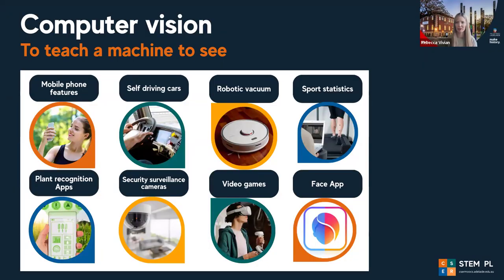Now we're going to jump into looking at a couple of areas: computer vision and natural language processing. Computer vision is essentially an approach to teaching a machine to see. Computer vision techniques are used in a whole range of digital systems that allow machines to recognize objects in the world. Interesting examples include monitoring plants via an app on your phone, robotics on farms navigating and assessing crops and picking ripe tomatoes, and using computer vision in sports medicine to help improve performance and monitor issues.